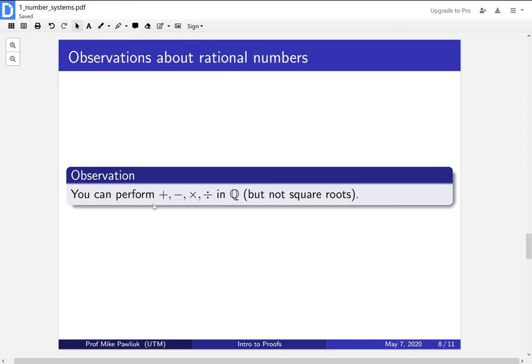In fact, for a long time, the ancient Greek mathematicians thought that all numbers were rational, and that you could perform all of these operations with them. It was quite a surprise to them to learn that there were numbers that are not rational. But we'll get there in a moment.